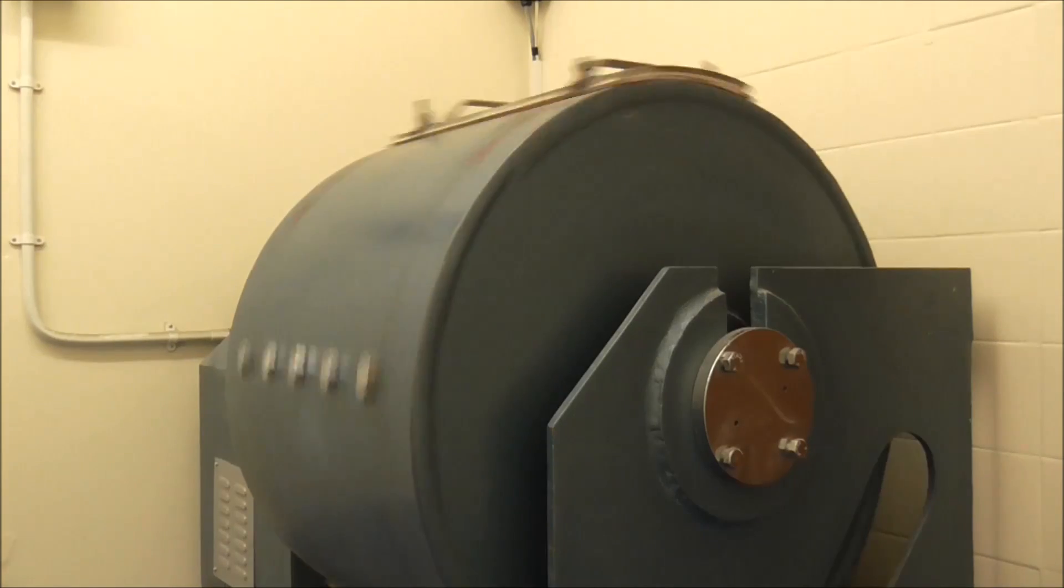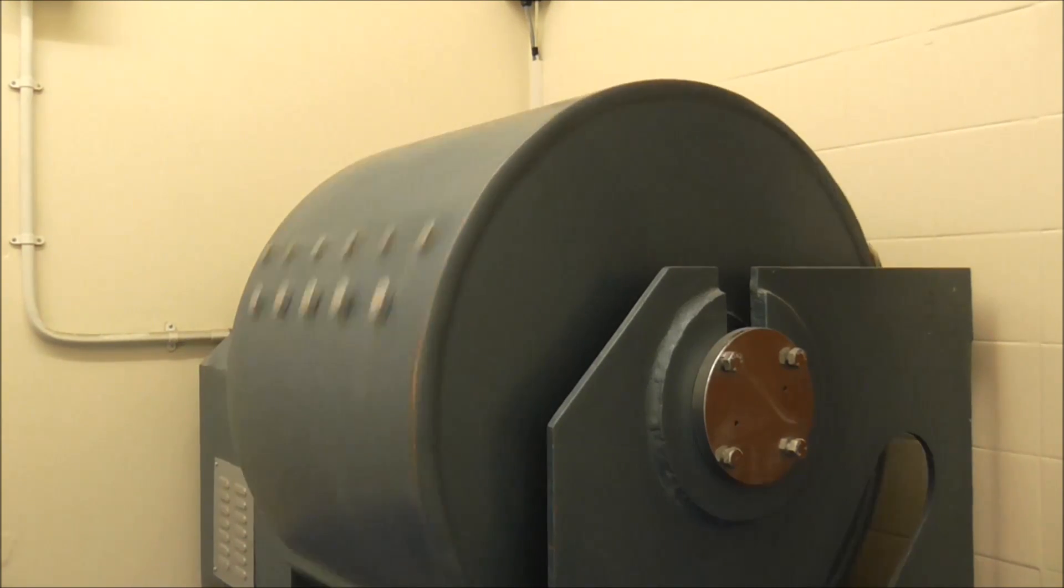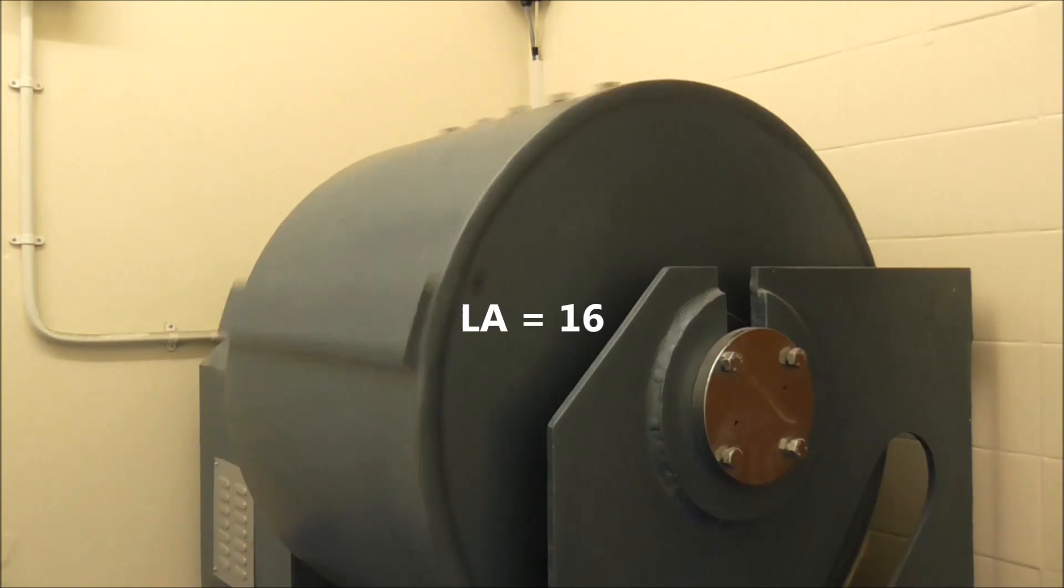Using this equation, we can work out the Los Angeles coefficient, where m is the mass of the material retained on the 1.6mm sieve. So in our case, the equation becomes 5000 minus 4216 divided by 50, which gives a value of 16, as we round to the nearest whole number.